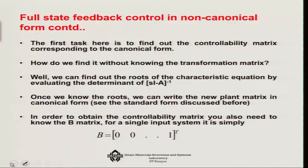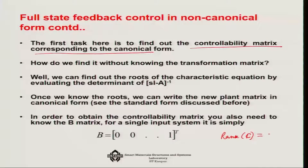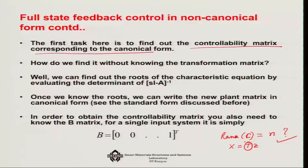Before doing anything, check the controllability matrix and whether the system is controllable. If you check the rank of the controllability matrix and verify it equals the number of states of A, then you can proceed; otherwise controller design is not possible. To find the transformation matrix T, first find the roots of the characteristic equation from det(SI minus A) equals zero — this gives the characteristic equation, and from it you can develop your control canonical form.